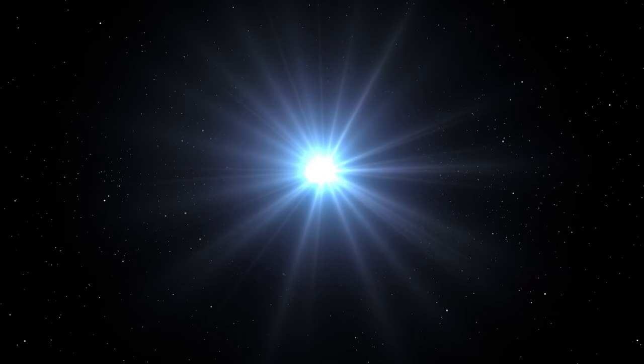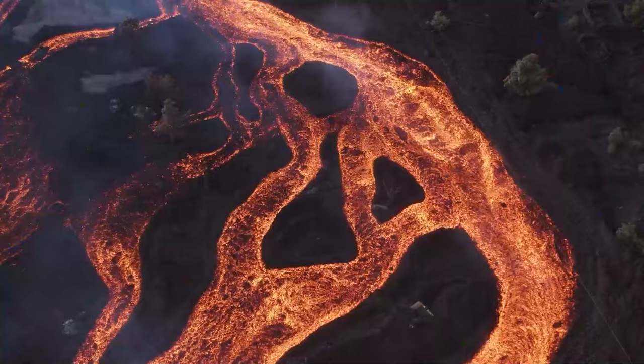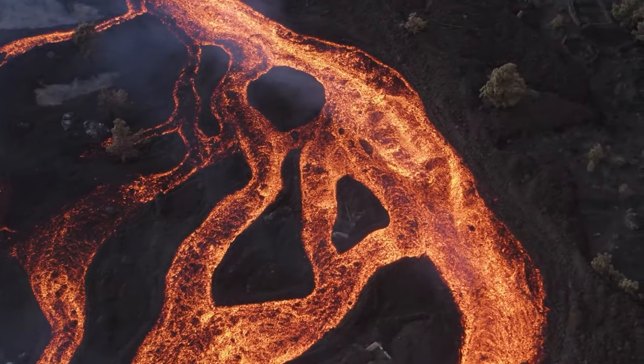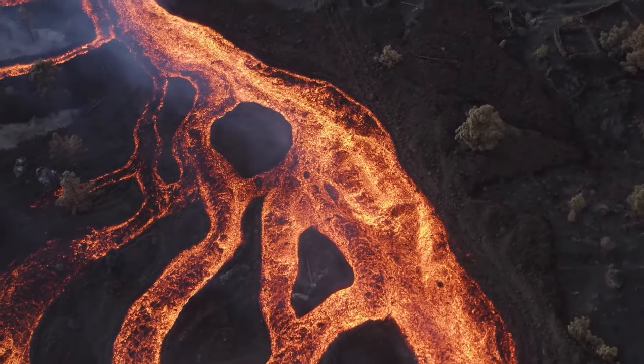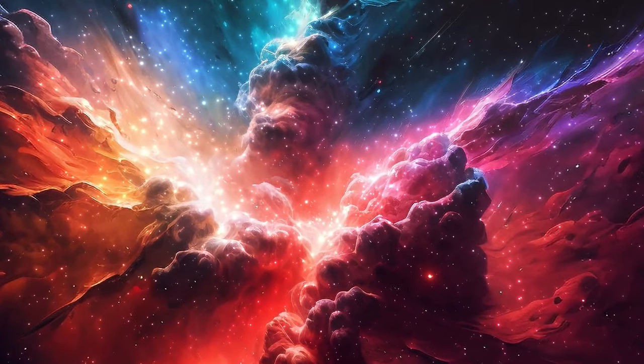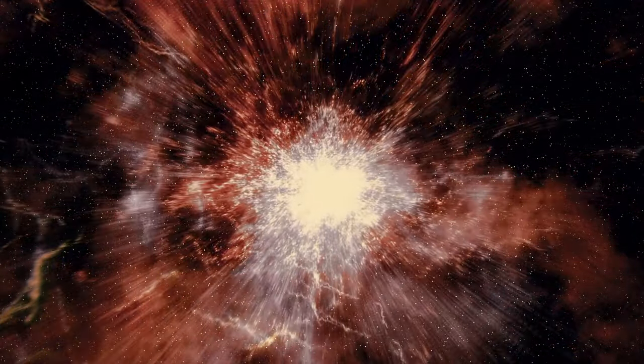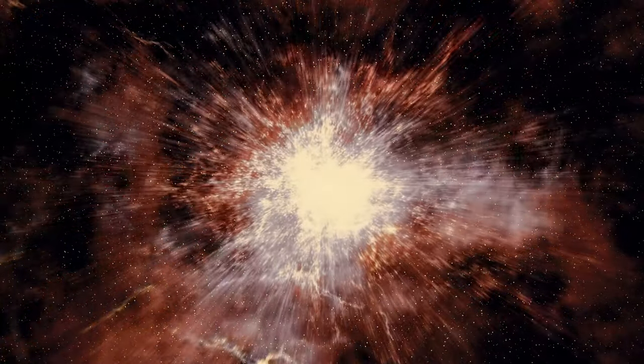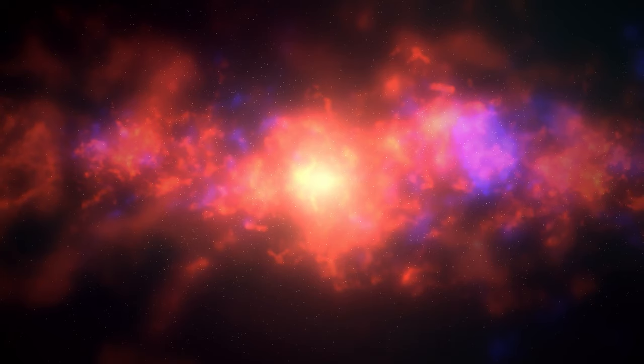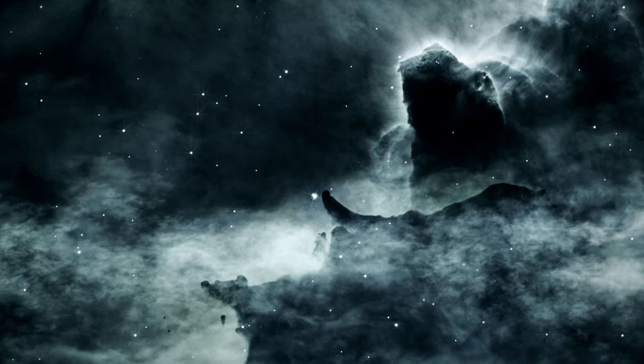Yet this grandeur comes at a price. The more massive the star, the more unstable its life. Many supermassive stars undergo periods of intense pulsations, causing them to eject vast amounts of material into space. This constant tumult makes their surfaces boil and roil with massive convective cells, each one many times larger than our entire sun. Their demise is as spectacular as their lives. Once the fuel in their cores is expended, they can't support their immense gravitational pull, leading to a spectacular supernova explosion.